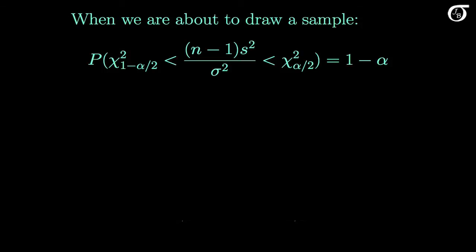When we are about to draw a sample, the probability that n-1 times s-squared over sigma-squared takes on a value between chi-square sub 1-alpha over 2, and chi-square sub alpha over 2 is 1-alpha, because this middle term has the chi-square distribution with n-1 degrees of freedom.